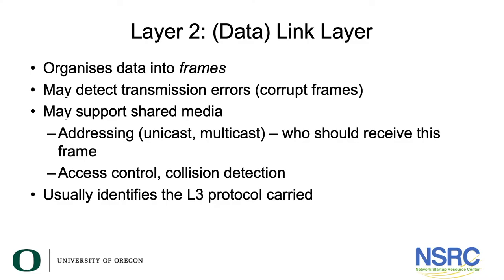There are additional things that Layer 2 can do depending on what network technology you're using. Some Layer 2s will detect transmission errors — they will detect whether a frame has been corrupted or not. Some Layer 2s may support the idea of a shared medium, for example multiple devices on the same Ethernet or multiple devices on a wireless network. If you're sending data between multiple devices, you need some way of identifying which device should receive each frame, so Layer 2 can have its own addressing system. That's unicast for one destination, or a special address called multicast or broadcast which means the frame goes to multiple or all destinations.